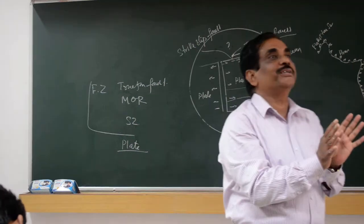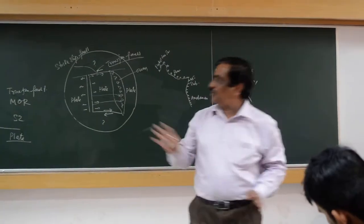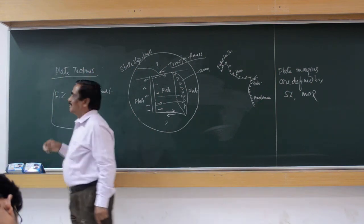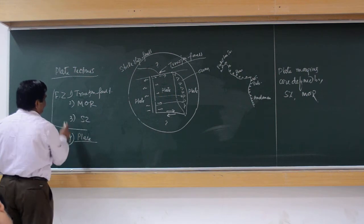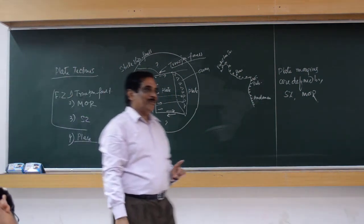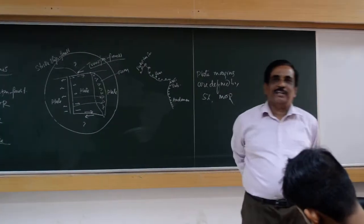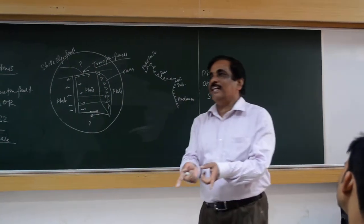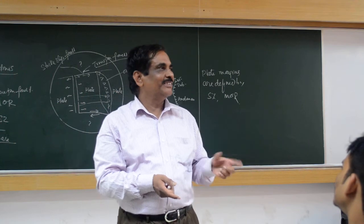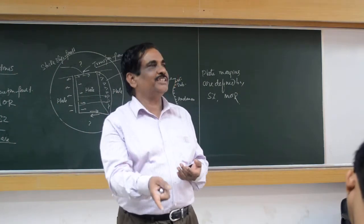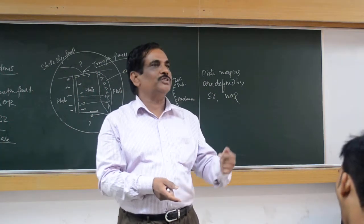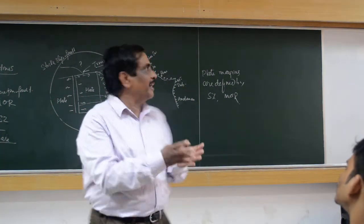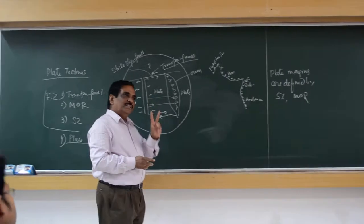That story is called plate tectonics. So plate tectonics has these elements: the plate, the mid-oceanic ridge, the subduction zone, and the transform fault — these four features all have to be there. If I say during Proterozoic time there was no plate tectonics, that means there were no plates, no transform faults, no mid-oceanic ridges, no subduction zones — because they are associated features. If a plate exists, mid-oceanic ridge has to exist, subduction zone has to exist, transform fault has to exist; otherwise the system cannot work.